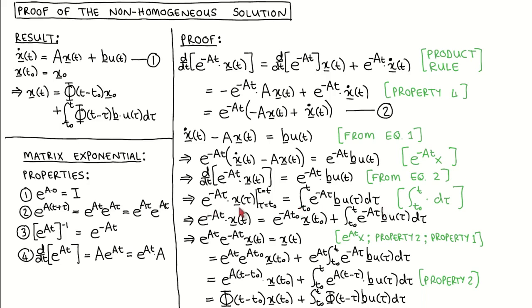After evaluating this term at tau equal to t and tau equal to t0 and moving the term with t0 to the right-hand side, we get this line. It is now almost in the form we want.